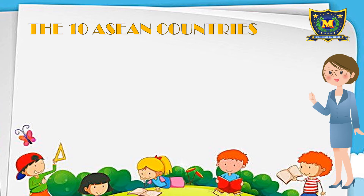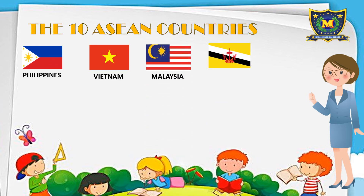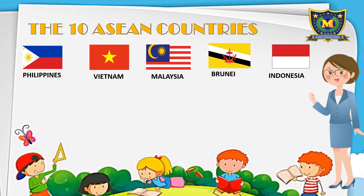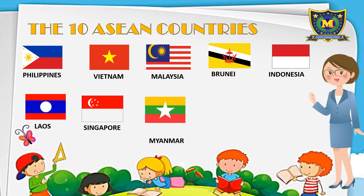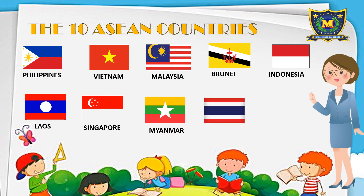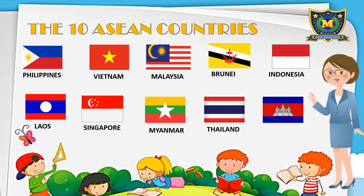The first member of the ASEAN countries is the Philippines. The second is Vietnam. Third is Malaysia. Fourth is Brunei. Fifth is Indonesia. Sixth is Laos. Seventh is Singapore. Eighth is Myanmar. Ninth is Thailand. And the last one is Cambodia.